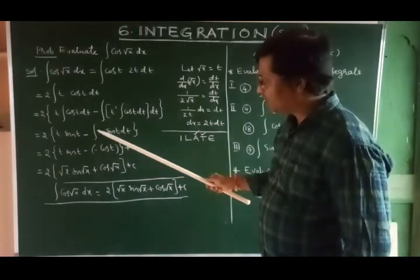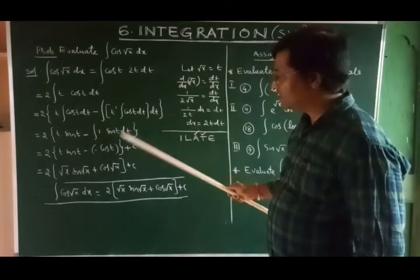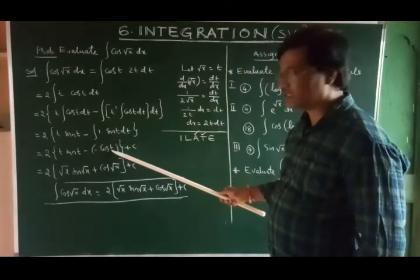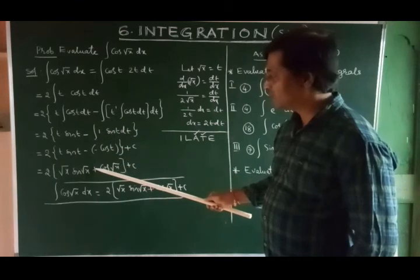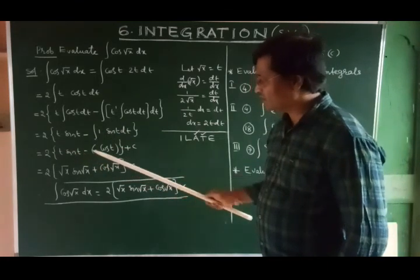Once again, here, applied integral sine t dt, that is minus cos t. Minus into minus, plus, and substitute t value.